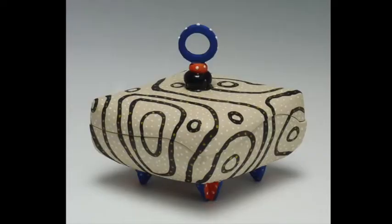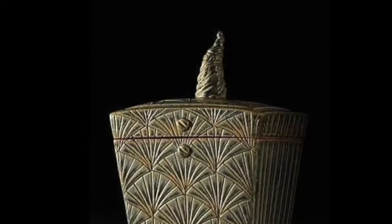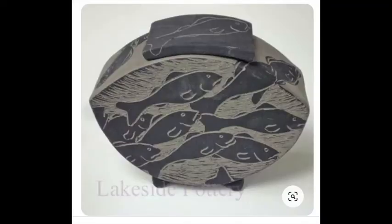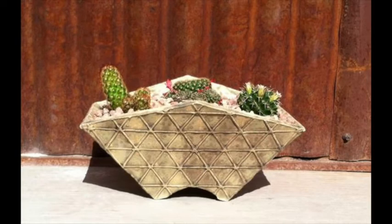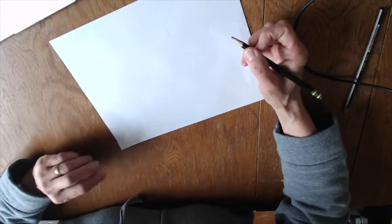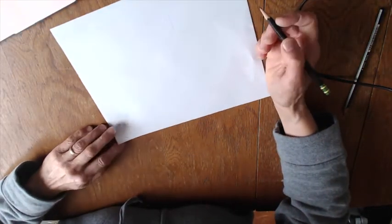You can make something that's tall and thin, short and squat. You can change the shape of the sides so that it's not a square. Today I want you to draw your box so you know how to draw your templates in the next step.